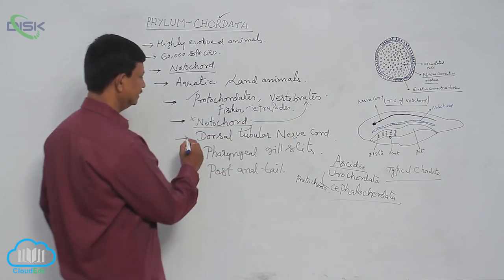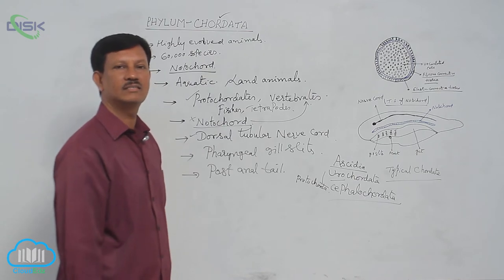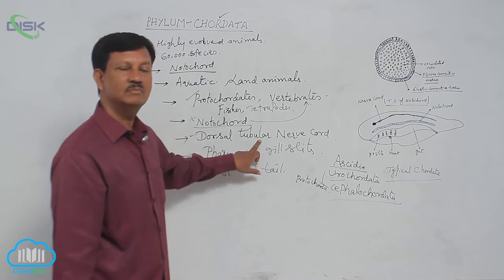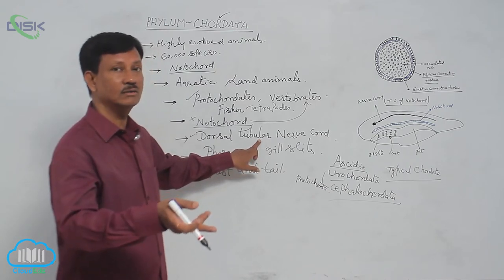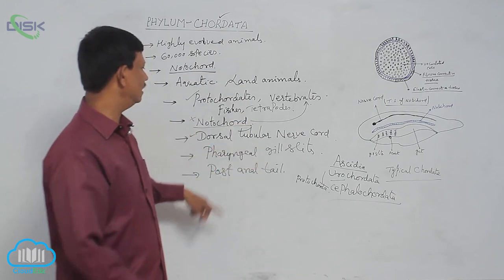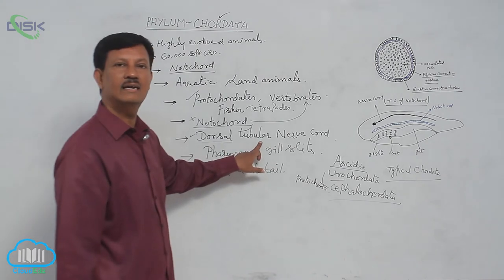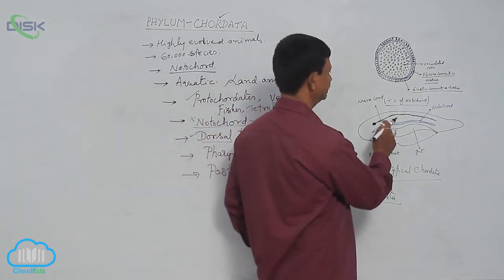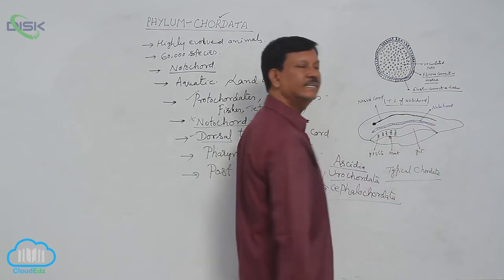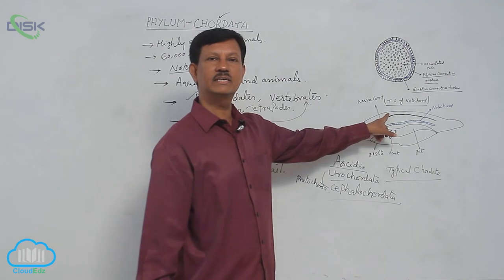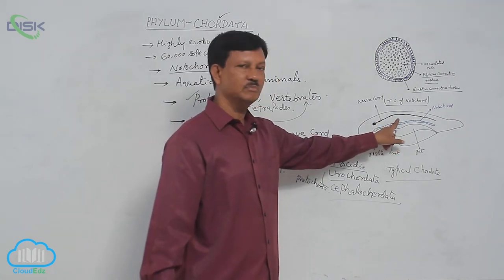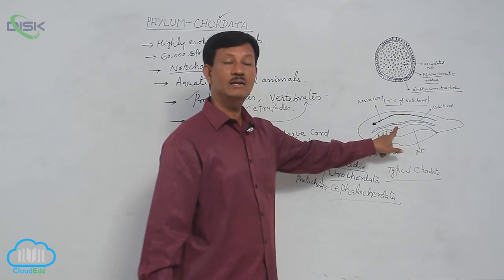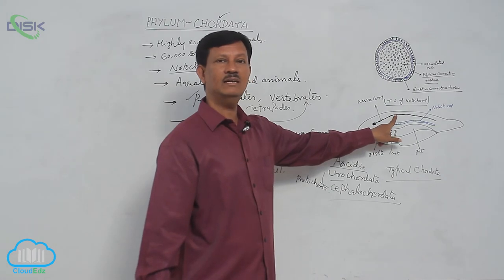The second important character is the dorsal tubular nervous system. As discussed in previous classes, in non-chordates the nervous system, if present, is situated on the ventral side. But here in Chordata, the nervous system is present on the dorsal side. It is long, cylindrical, and tube-like — that is why it is known as the dorsal tubular nerve cord. It is situated above the notochord and develops from the ectoderm, whereas notochord is derived from the mesoderm.